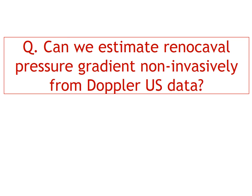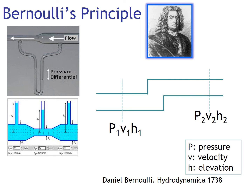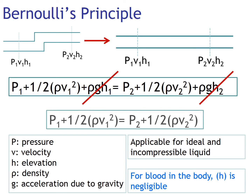Can we estimate renal caval pressure gradient non-invasively with Doppler ultrasound data without invasive venography? The answer is theoretically yes. The theoretical background is the well-known Bernoulli principle of hydrodynamics, showing the relations among pressure P, velocity V, and elevation or height H. For blood in the body, H is negligible, so we can remove that term and the equation becomes much simpler.